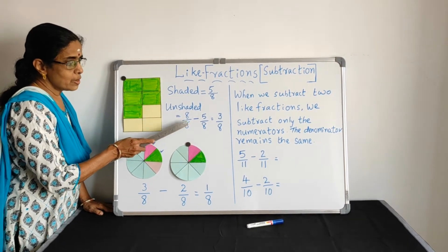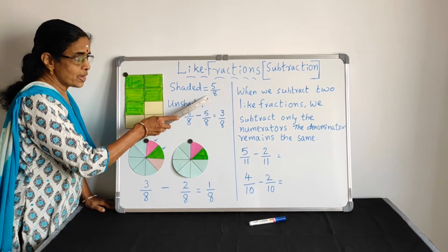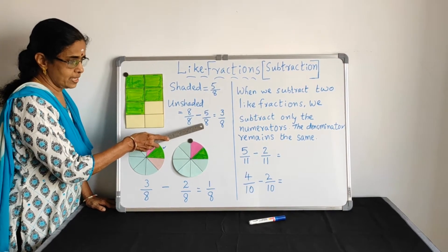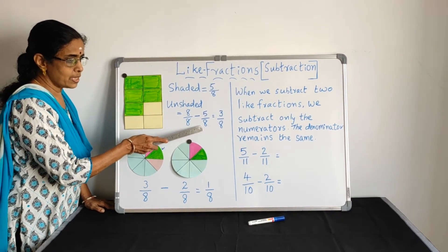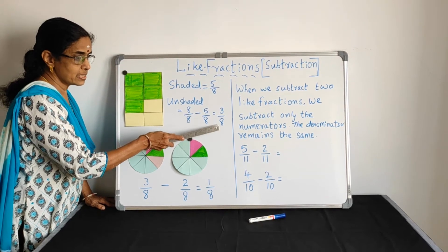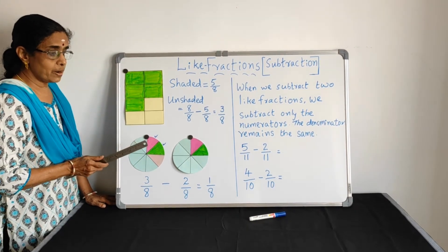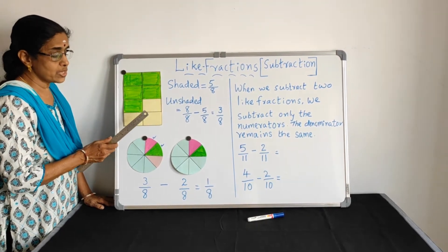So, 8 by 8 minus 5 by 8. 5 by 8 is color. So 8 by 8 minus 5 by 8, we are getting 3 by 8. Unshaded part, 3 by 8. Yes, you can check with the picture.